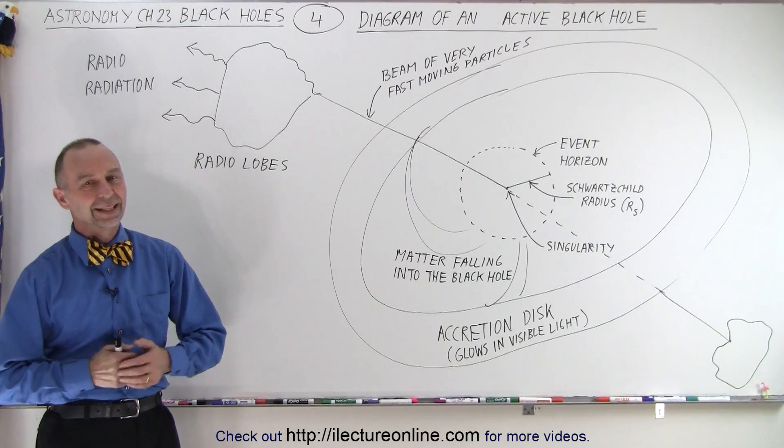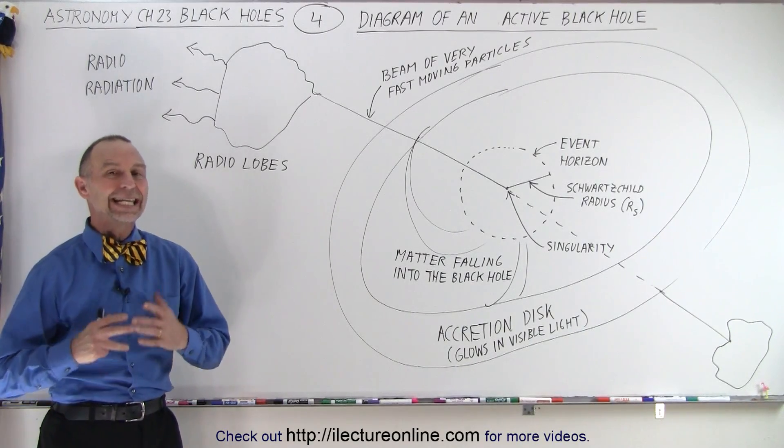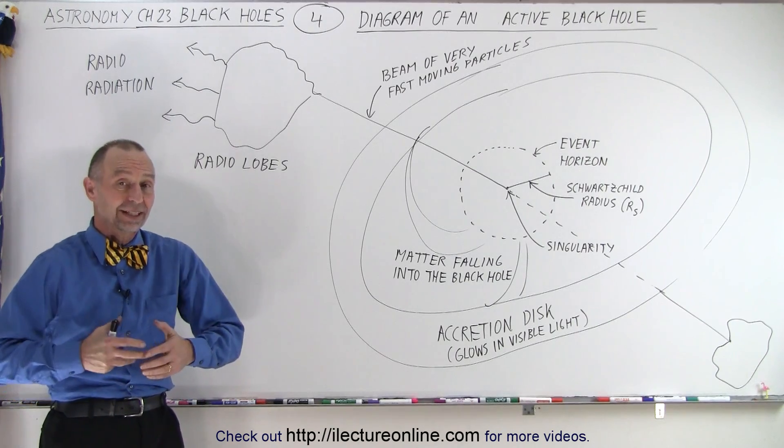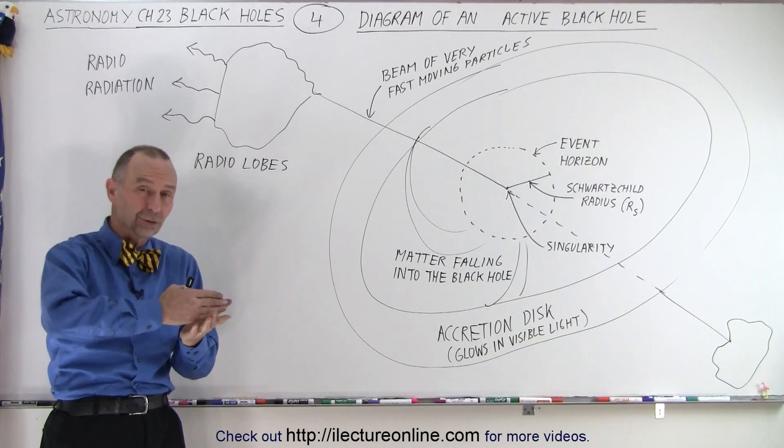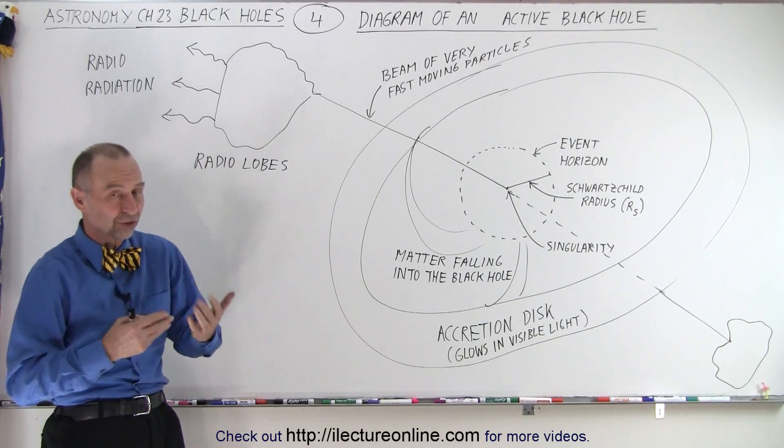Welcome to Electronline! In the last video we saw what an inactive black hole looked like. It basically just had three parts: the singularity, the event horizon, and the distance from the singularity to the event horizon, which was the Schwarzschild radius.